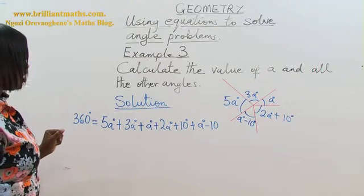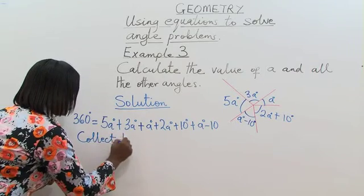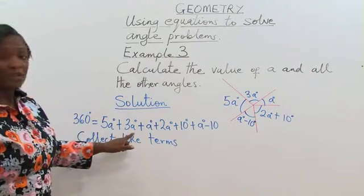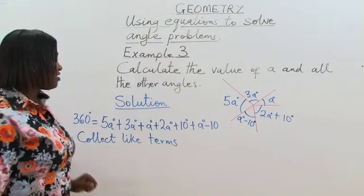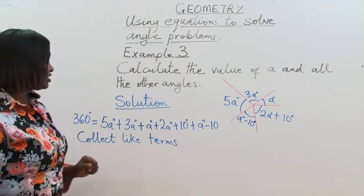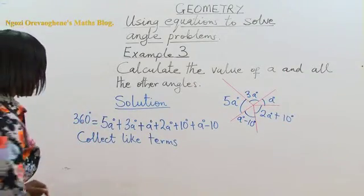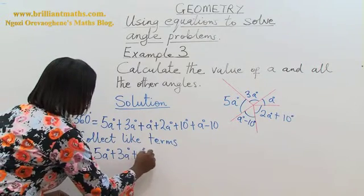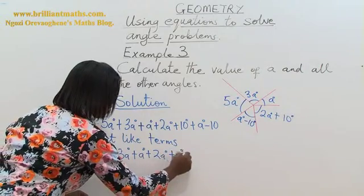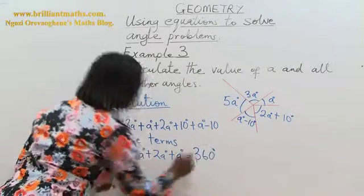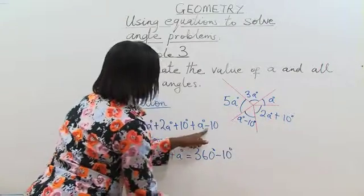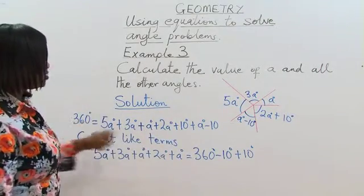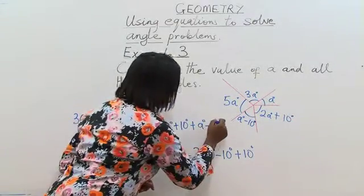So the next step is to collect like terms. The like terms here are 5a, 3a, a, 2a, and a. And also the constants are 360 degrees, 10 degrees, and 10 degrees. So we are collecting like terms. So we have 5a plus 3a plus a plus 2a plus a is equal to 360 degrees, take away 10 degrees, add 10 degrees. This comes over to the other side, so it becomes a take away. And 10 degrees goes over to the other side and becomes a plus.